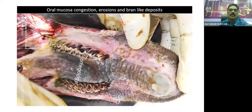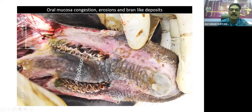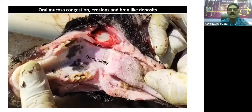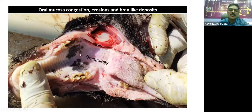Now we can see the oral mucosa one by one. There is congestion, erosion, and bran-like deposits. Congestion is present and small white masses are nothing but bran-like deposits. The oral cavity — the soft palate and hard palate — will show erosions, inflammation, and bran-like deposits. Here, the dorsum of the tongue is smeared by bran-like deposits. Other parts of the oral mucosa show congestion. There is presence of small bran-like deposits over the mucosa of the soft palate.